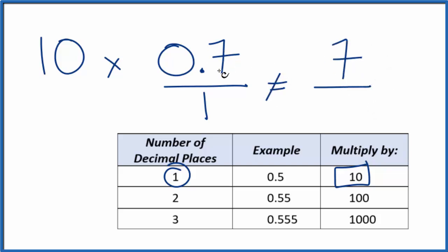But 7 does not equal 0.7. We need to multiply the bottom by 10 as well. This way, 10 over 10, that's just 1. We haven't changed the value again, just the representation. 10 times 1 is 10, and our fraction is 7 tenths.